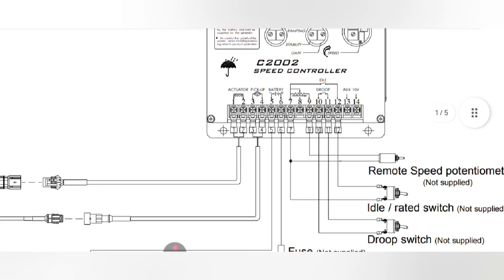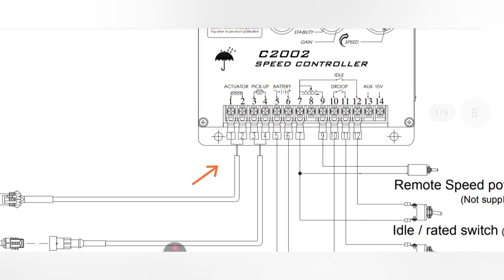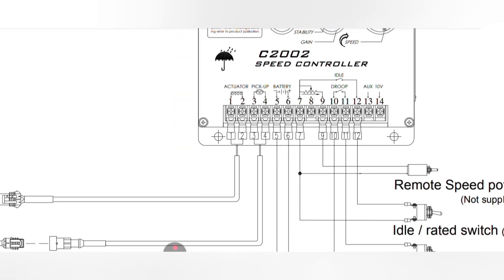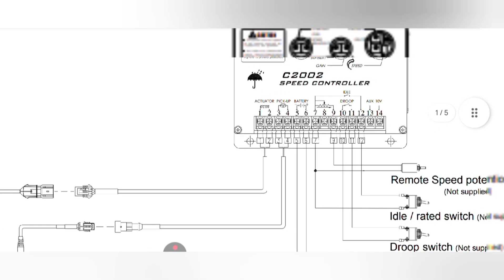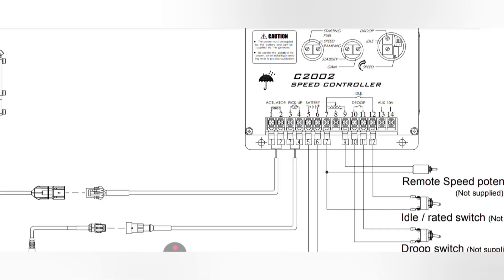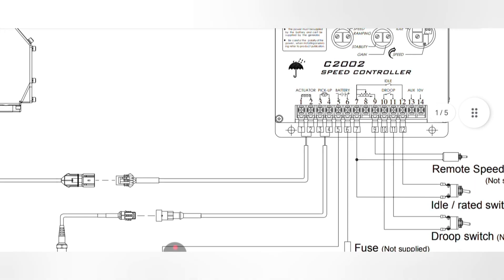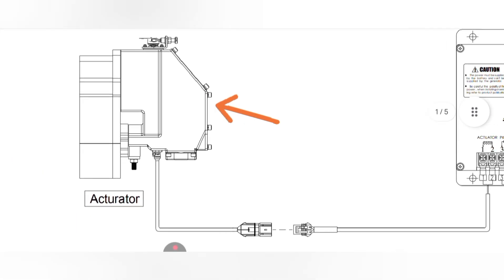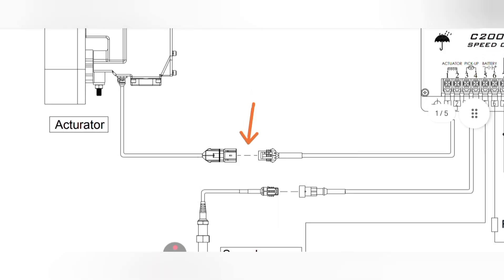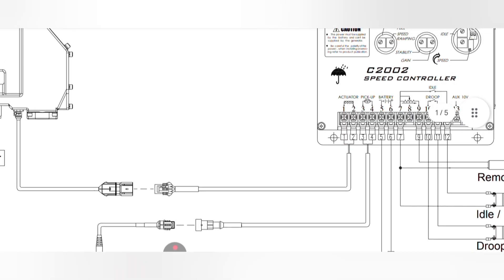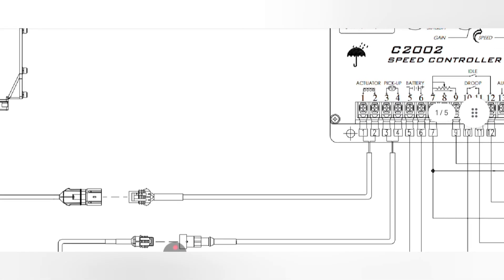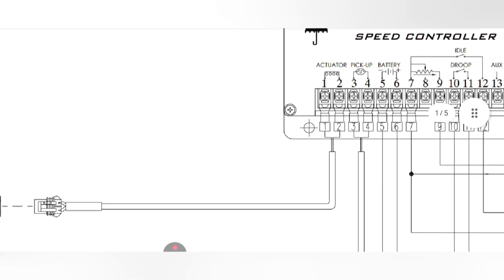Here is the overview of the C2002 speed controller. The terminal TV has 14 pins for inputs and outputs. Starting from the left side: pin number one and pin number two are the output to the actuator. These two wires carry AC generating current out to the actuator. As you can see, the actuator connects via a two-wire coupler connector in the middle.